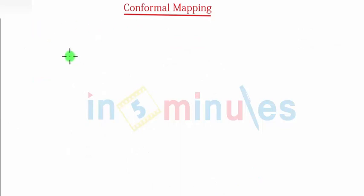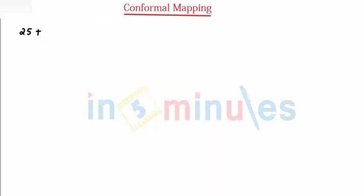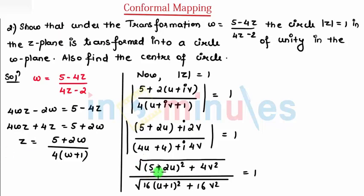Finally I will be squaring both sides. When I square both sides I will be expanding this bracket, so that comes 25 plus, using a plus b whole square, this comes to be 20u and the last is 4u square.